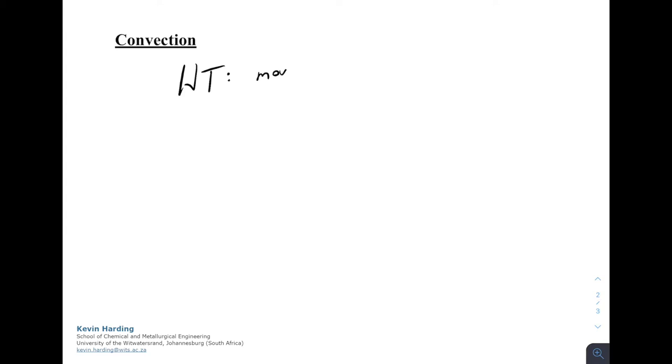Convection, on the other hand, is heat transfer because of movement. Some movement needs to happen for this to be convection. There are two types of convection.